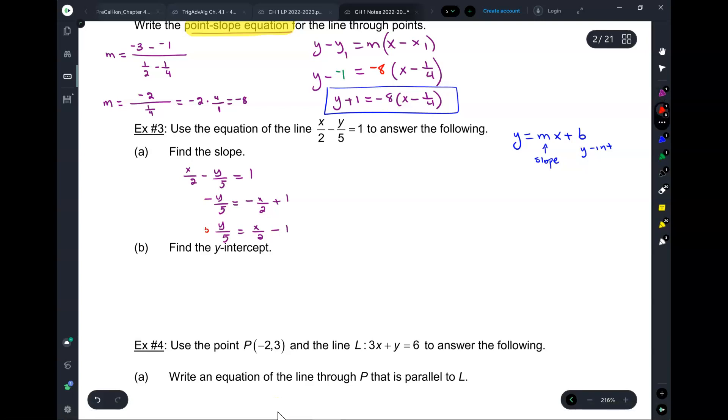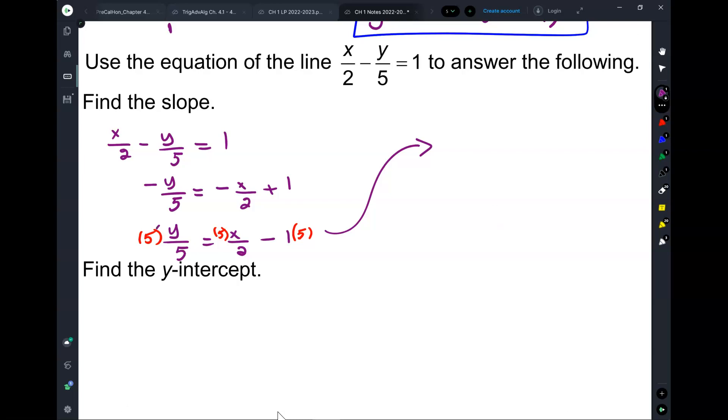So, if I multiply everything by 5, we got rid of the negative before, I divided it. Okay, so now I get y equals 5 over 2x. So, it's the same thing. 5x over 2 or 5 over 2x are the same thing, minus 5. Now, all of a sudden, the slope is 5 over 2.